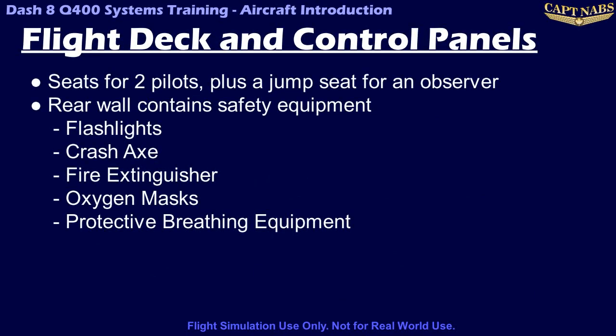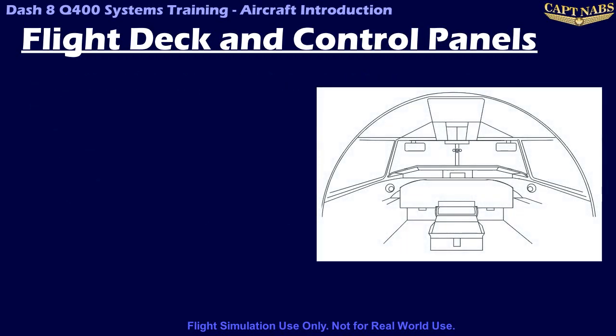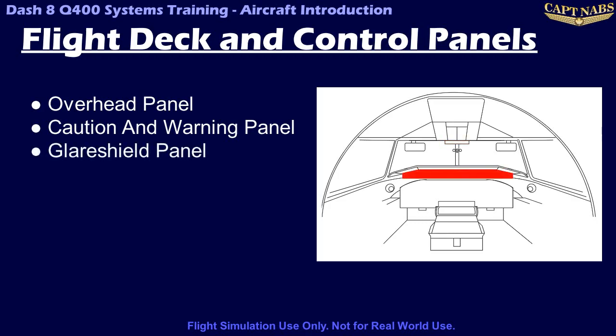The flight compartment contains two seats for the pilots as well as an observer jump seat. Various safety equipment is located on the rear bulkhead of the flight compartment. The overhead panel contains switches which control most of the aircraft systems. The caution and warning lights panel contains 84 caution lights and 12 warning lights to indicate a non-normal condition. The glare shield panel contains the flight guidance control panel, which controls the autopilot and flight director, and some other critical shutoff and control switches.